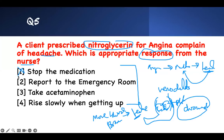'Report to the emergency room' — it's a common side effect; they don't need the ER. 'Take acetaminophen' — yes, we're treating the problem. That's the appropriate response. 'Rise slowly when getting up' — they're not dizzy from the nitro; they have a headache. Rising slowly won't solve that problem. The issue is blood in the brain, not orthostatic hypotension. Treat the headache. If they said they were dizzy, then rising slowly would be appropriate.